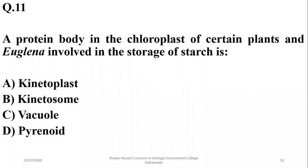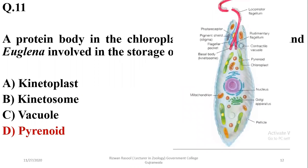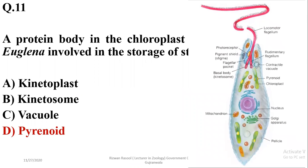Question eleven: a protein body in the chloroplasts of certain plants and Euglena involved in the storage of starch is the pyrenoid. The pyrenoid is a starch-storing structure found in many protozoans including Euglena, visible beside the chloroplast.